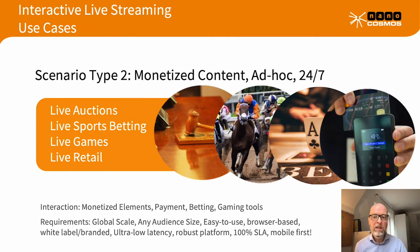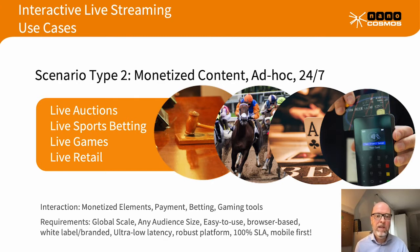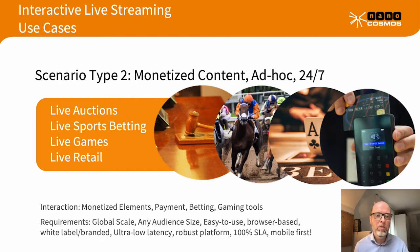Scenario two is a bit different. It's not based on specific large events but on a recurring event type of application where you have a recurring revenue channel — monetized content based on monetized video. That could be live auctions, live betting, live games, or even live retail. Similar requirements apply: global scale, any audience size, easy to use, increasingly mobile-first. Most of the audience is on mobile and browser. It needs to be very robust with 100% SLA to keep the recurring revenue channel running at all times.